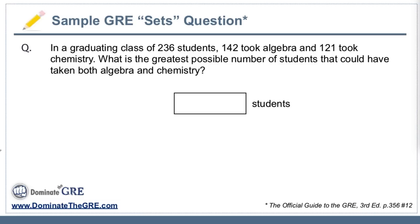What makes this problem a little bit more challenging is that it's actually asking for the greatest possible number of students that could have taken both algebra and chemistry. This is what we call a max-min problem.